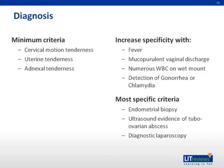A clinical diagnosis of symptomatic PID has a positive predictive value of 65% to 90% compared with laparoscopy, which is thought to be the gold standard for diagnosis based on early studies. Today, the diagnosis of PID is primarily made using clinical criteria. Of note, the diagnosis of PID requires ruling out other causes of abdominal pain, such as appendicitis, ectopic pregnancy, or other surgical emergencies.